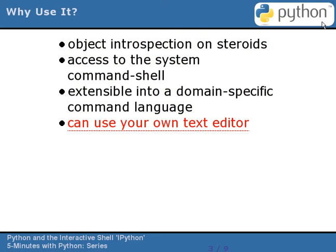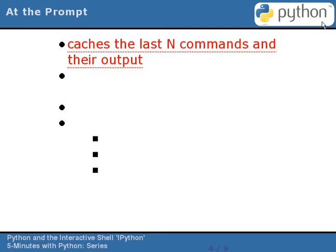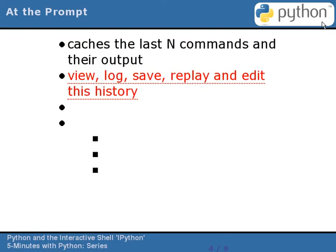IPython is friendly to those of us who are particular to our text editors, moving source seamlessly back and forth between the editor and IPython, while not forcing the use of a specific IDE text editor. At the prompt, IPython caches your most recent inputs along with the output they generated. This command history is easily viewed, logged to a file, and selectively saved into source files. You can bring selected portions into your editor and have changes re-evaluated into your session, and you can quickly convert groups of frequently used commands into named macros.